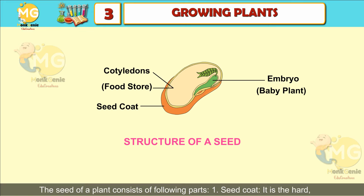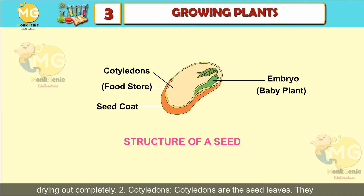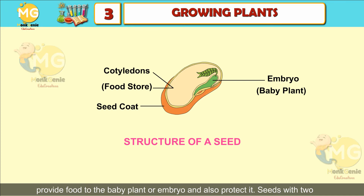Structure of a seed: the seed of a plant consists of the following parts. Number one: the seed coat — it is the hard outer covering of the seed that protects the interior parts and saves them from drying out completely. Number two: cotyledons — the cotyledons are the seed leaves. They provide food to the baby plant or embryo and also protect it.